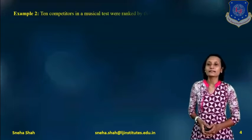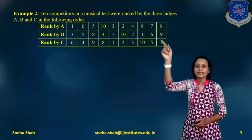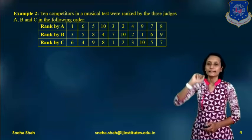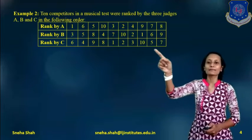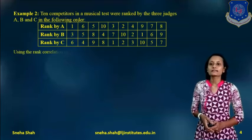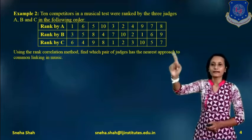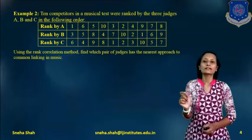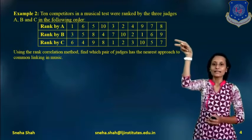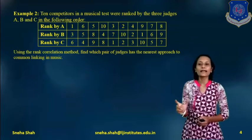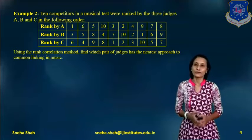The next example: 10 competitors in a musical contest were ranked by three judges A, B, and C in the following order. Ranks given by A are 1, 6, 5, up to 8; similarly for B and C. Using the rank correlation method, find which pair of judges has the nearest approach to common liking in music. We must find rank correlation between A and B, B and C, and A and C.